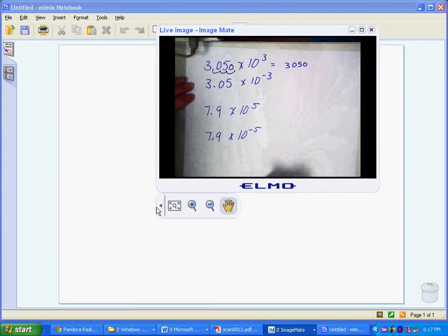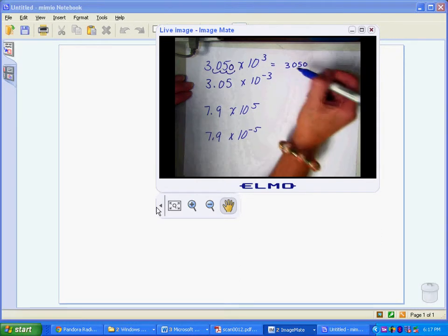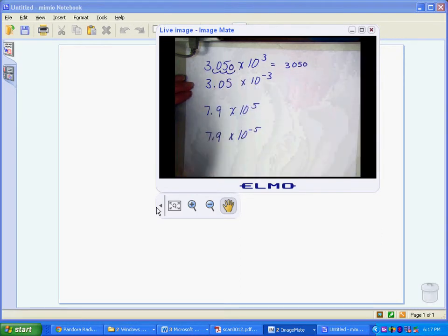And I can just double check myself. My decimal is understood to be here in ordinary notation. If I move it one, two, three places, then I would have 3.05 times 10 to the third.